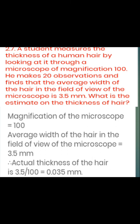The magnification of a microscope is given. If you observe 3.5 mm under the microscope, the actual thickness will be 3.5 mm divided by the magnification factor, giving 0.035 mm. This is a very simple numerical problem.